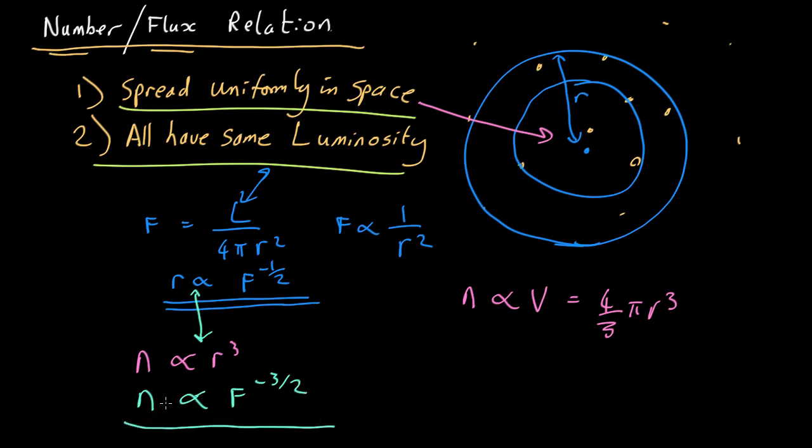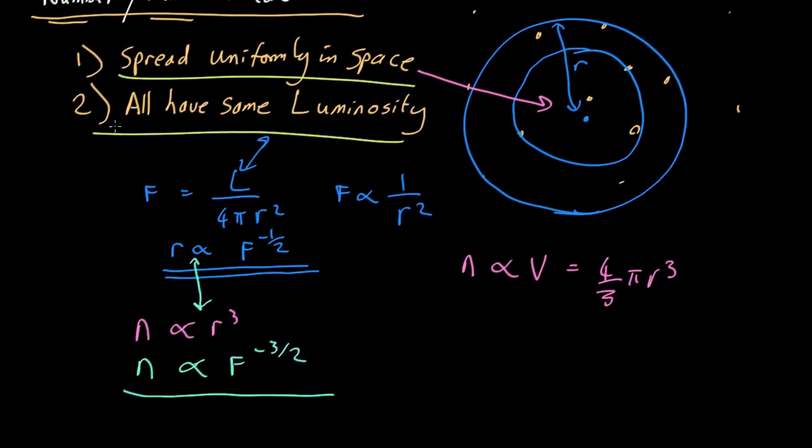So what that's telling us is that if our two assumptions hold, if we see a brighter one it must be closer according to this equation here. And if it's closer, we can only see things of that brightness over a smaller volume, so we're going to see less of them. So as you get brighter by observed flux, the number should go down as the minus 3 halves power.